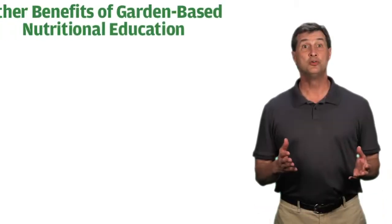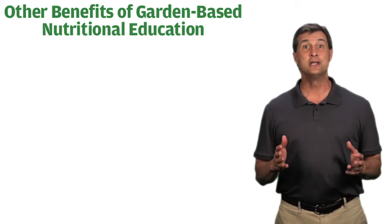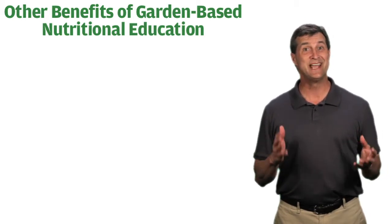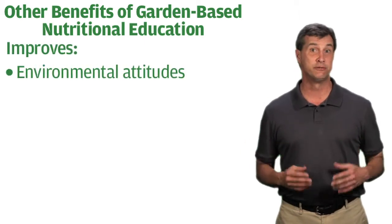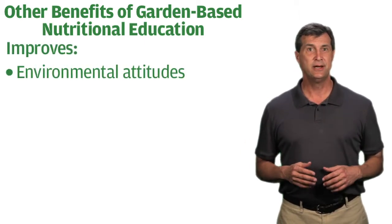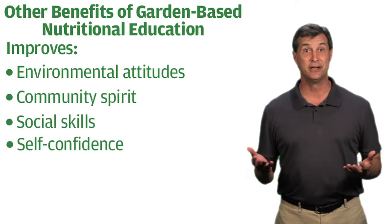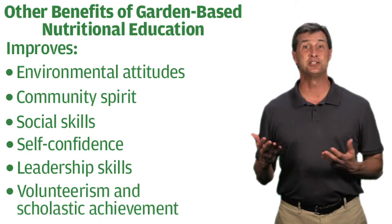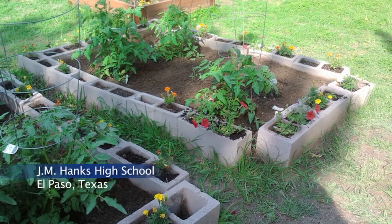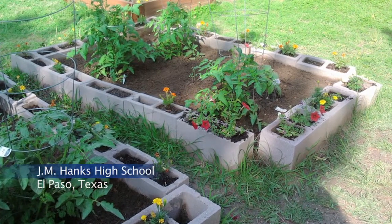In addition to molding a positive attitude toward fresh food, the National Gardening Association reports that tending a student garden improves environmental attitudes, community spirit, social skills, self-confidence, leadership skills, volunteerism, and scholastic achievement. One example of how growing on a little plot can make a big difference is the Salsa Garden at J.M. Hanks High School — a small, 400-square-foot garden in its early stages.